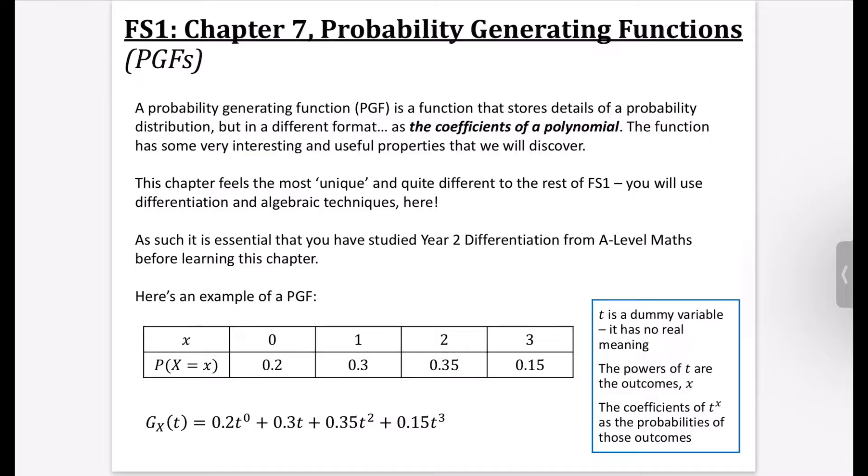So what actually is a probability generating function? Well, a probability generating function is a function that stores the details of a probability distribution, but in a different format. And the way it does it is it stores it as the coefficients of a polynomial. The function has got some very interesting and some useful properties that we will discover over the course of this chapter.